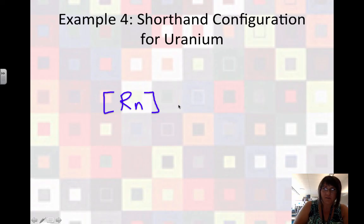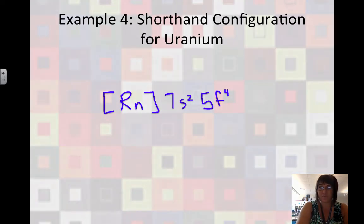So here's our configuration for uranium. We started with radon. Then we fill in 7s with two electrons. And the 5f, not the 7f, 5f gets to hold four electrons. There we go. So we'll practice this in class until you'll be an expert.